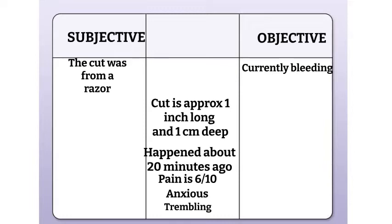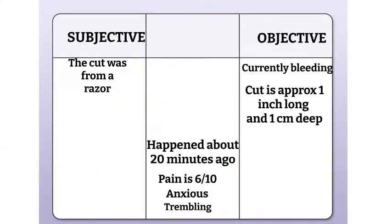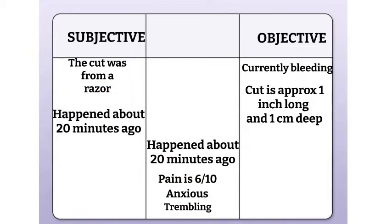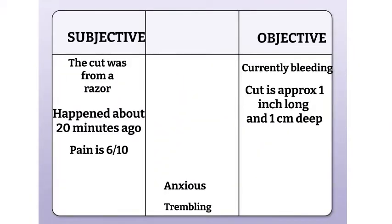This cut is approximately one inch long and one centimeter deep. The clue here is that you have measurements. Remember, all objective data is measurable and observable, so the fact that you can measure this makes it an objective piece of data. This cut happened about 20 minutes ago — we didn't see it happen. The only way that we know this is because the patient is telling us, just like the patient told us that the cut was from a razor. Therefore, this is subjective. Next, we have a pain level of 6 out of 10. The way that we know is because he told us. Therefore, this is subjective. The patient is anxious — we know this because the patient told us he's feeling anxious. Therefore, this goes under subjective.